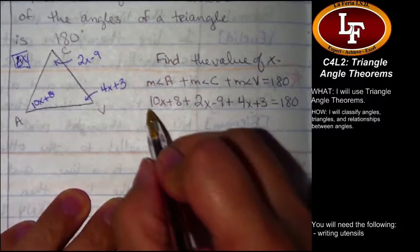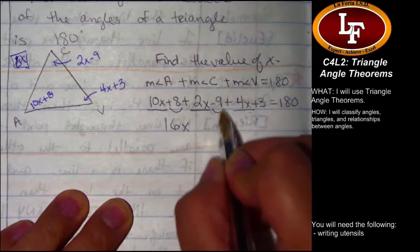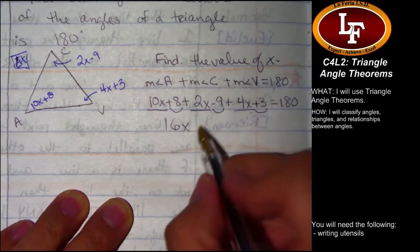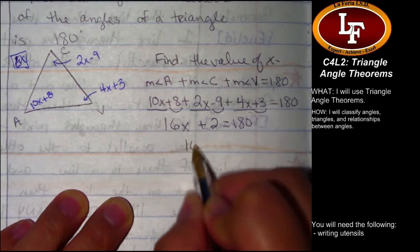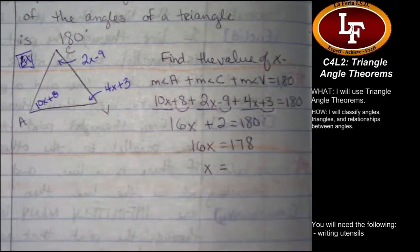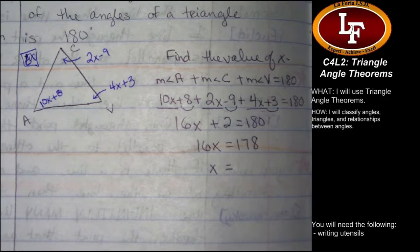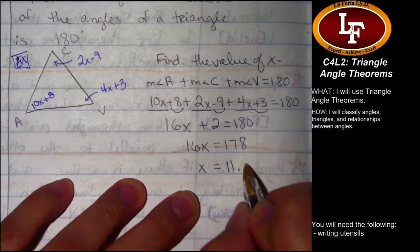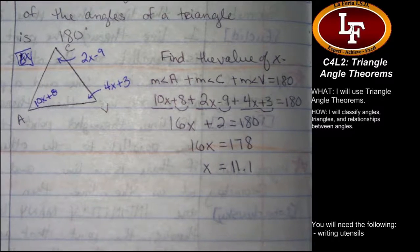And now I'm going to do some algebra to it. So I've got some like terms to combine. Here are my x's. All my x's. And then I have all of my numbers here. 8 minus 9 is negative 1 plus 3 is 2. Positive 2. And now I'm going to subtract 2 from both sides, giving me 178 over here. And I'm going to divide everything by 16. And that's totally not a whole number. And this is why I get help from people to help me make your worksheet so I get whole numbers. My calculator says that it's 11.1-ish. We'll just go with that. We'll round it to the 10th decimal place and be done with it. Makes sense? Pretty simple?